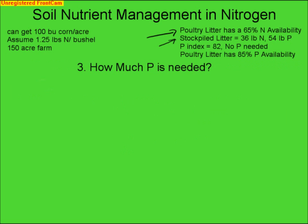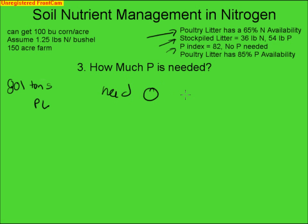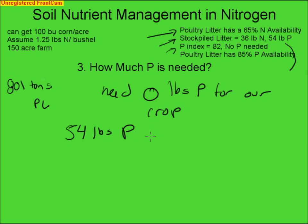We now know we are going to apply 801 tons of poultry litter, and we need to determine how much phosphorus is needed. Looking at a P index of 82, it is in the range that is not responsive to treatment, so we need 0 pounds of P for our crop. However, if you look at the poultry litter, there are 54 pounds of P2O5 in each ton of fertilizer, so you are applying P even though you don't need it.